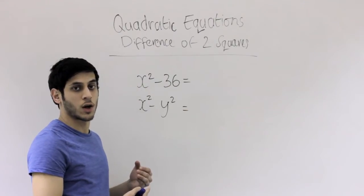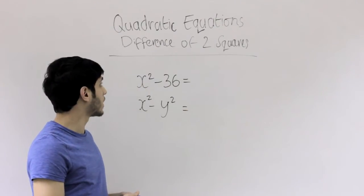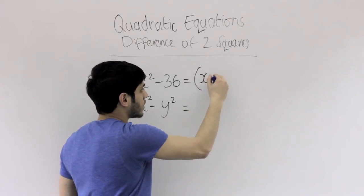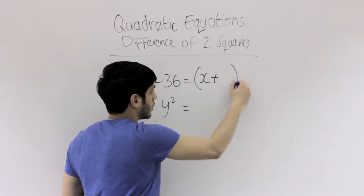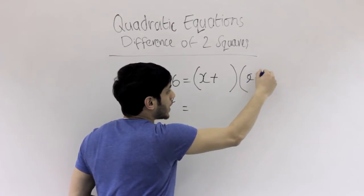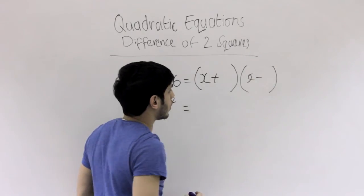To answer these questions, we're going to be factorizing them, and difference of two squares will always be in this form. So it's always x plus whatever your number is, and then it's x minus whatever your other number is.